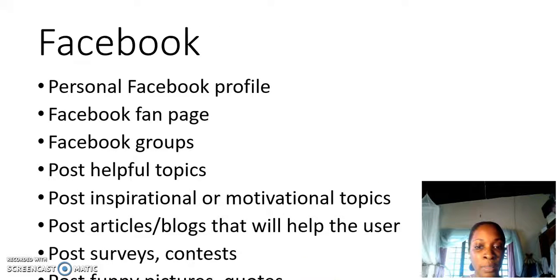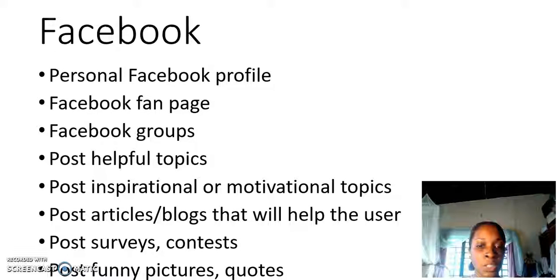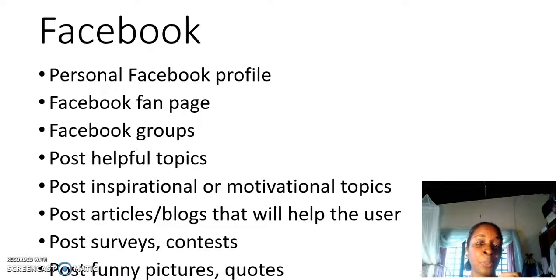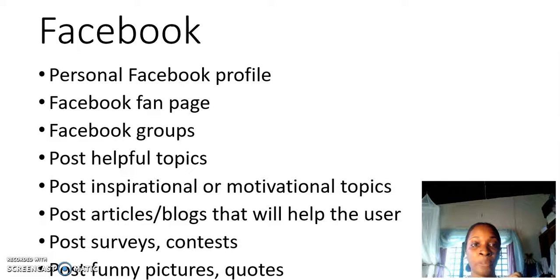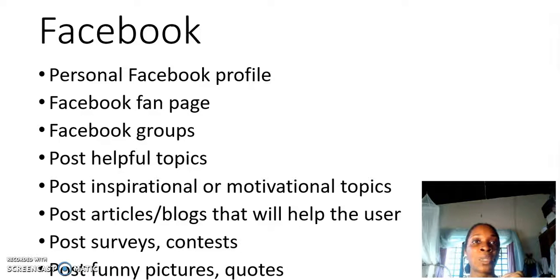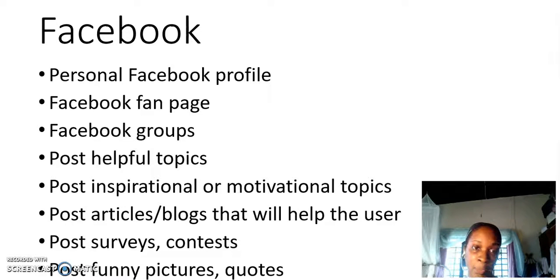The next type of free traffic source is on Facebook. You can use a personal Facebook profile. I've seen so many people come into the 4% group and they have simply posted their link, told a story, and said what the 4% group has done for them. When they post that to their personal profile, their friends see it. So if you have a lot of friends on Facebook, that's one way you can generate traffic. You can also do the same on your Facebook fan page, but Facebook has changed its algorithm so that not many people see your posts on a fan page as opposed to a personal profile.